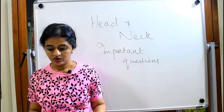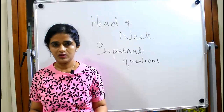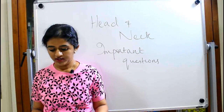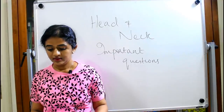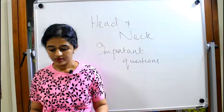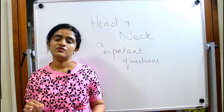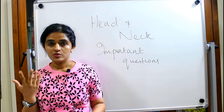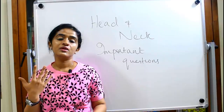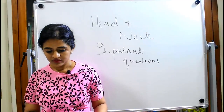Coming to the veins: the internal jugular vein is a favorite question. Know the carotid sheath, and the styloid apparatus. When discussing lymphatic drainage of the head and neck, know Waldeyer's ring in detail and the different levels of lymphatic drainage — that is very very important.